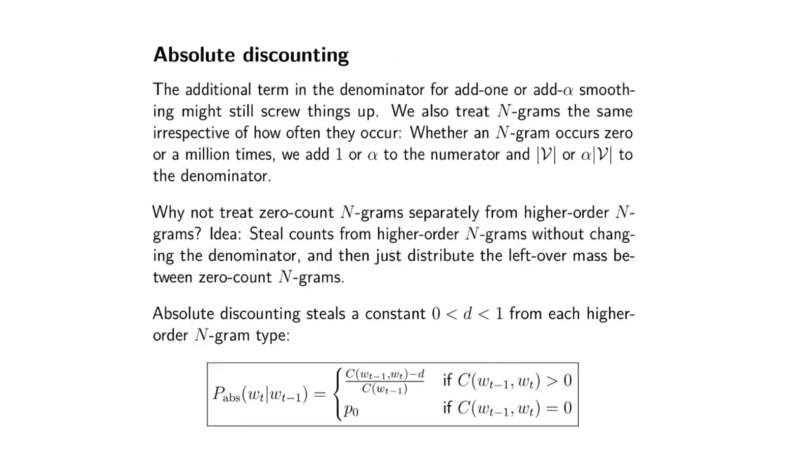The other interesting thing is we're treating all n-grams the same irrespective of how often they occur. What I mean is whether your n-gram occurs a million times or only once, you're adding 1 or alpha to the numerator and adding |V| or alpha|V| to the denominator, irrespective of how often that specific n-gram occurs.